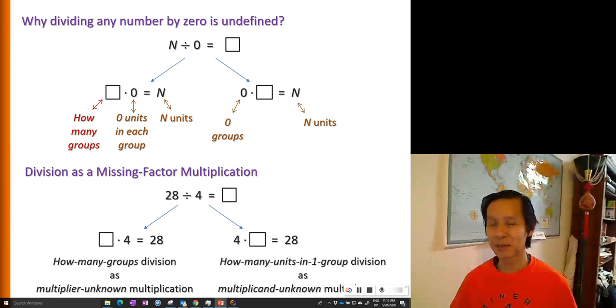Zero times any finite number is still zero. So that's why it's impossible. It's just not possible to find a finite number of units in each group that will give you N units if you have zero groups.